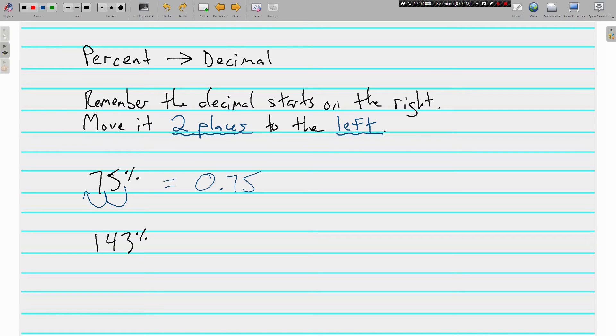sending the decimal the other way. 75% is 0.75, 75 hundredths, 75 out of 100. 143% gives us 1.43. So percent to decimal, decimal to percent, pretty straightforward. You're just moving the decimal either left or right.